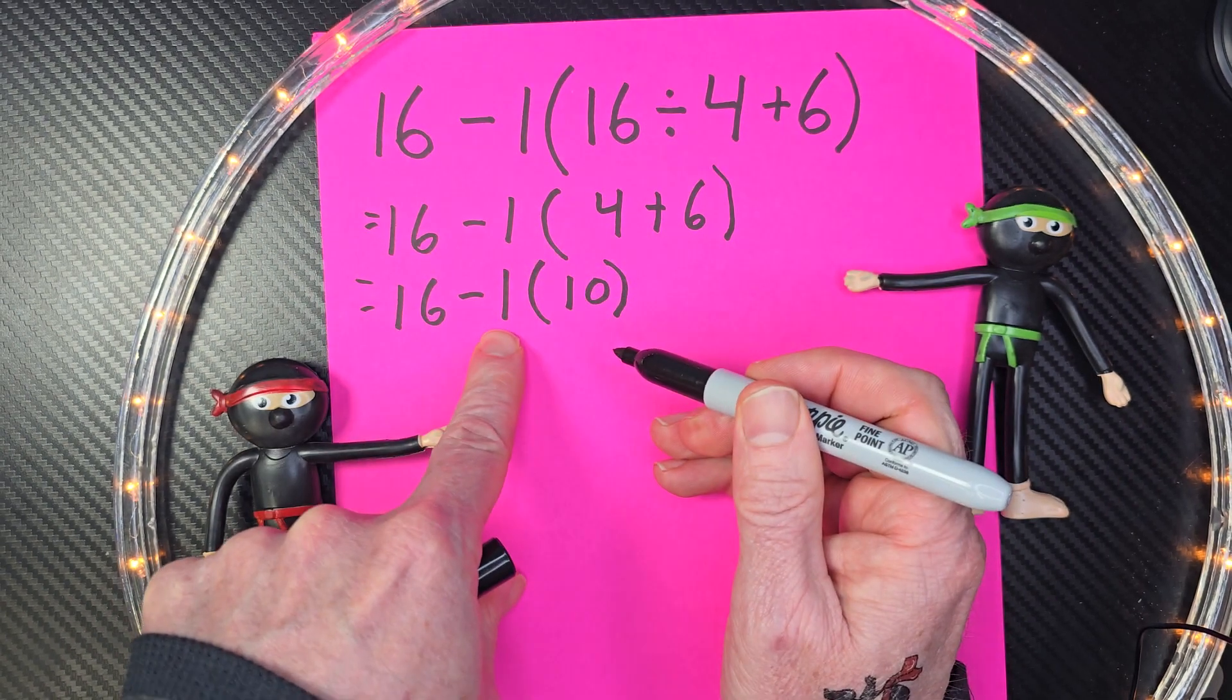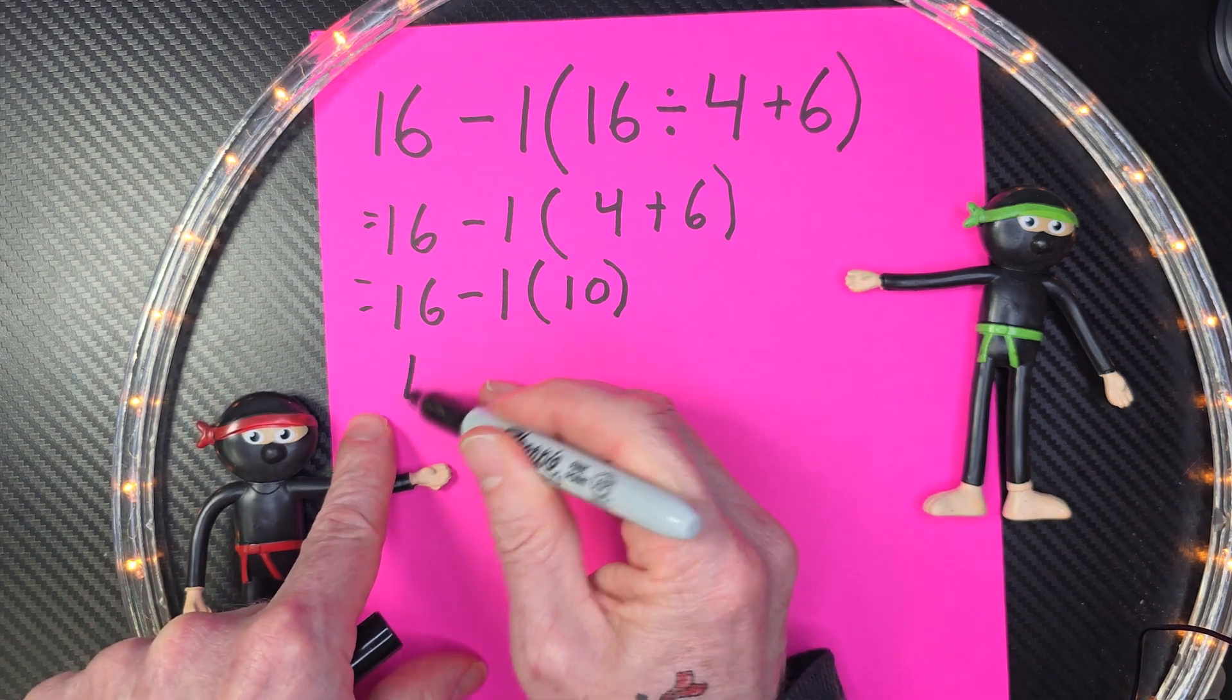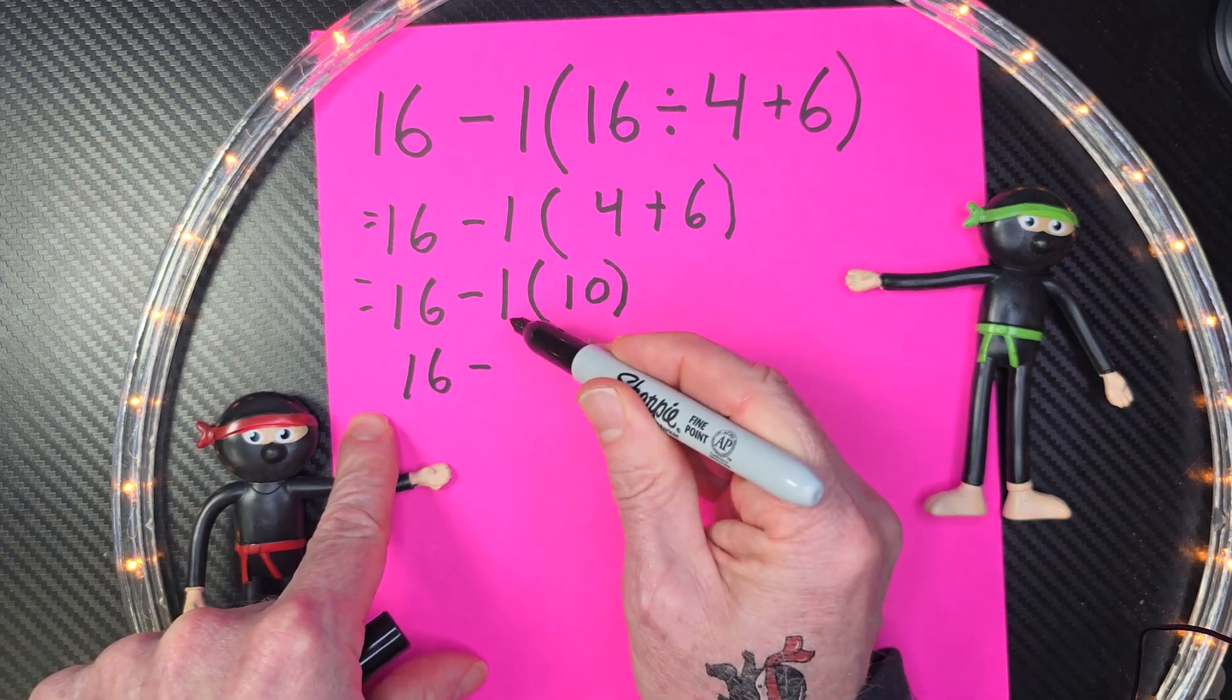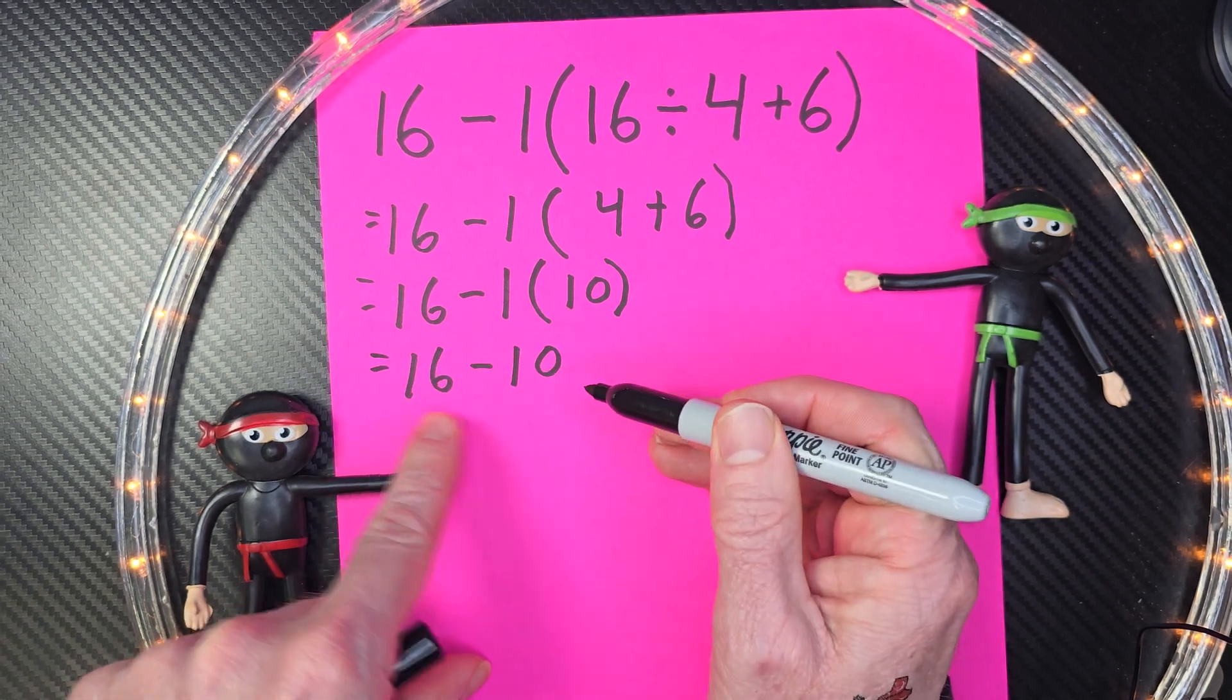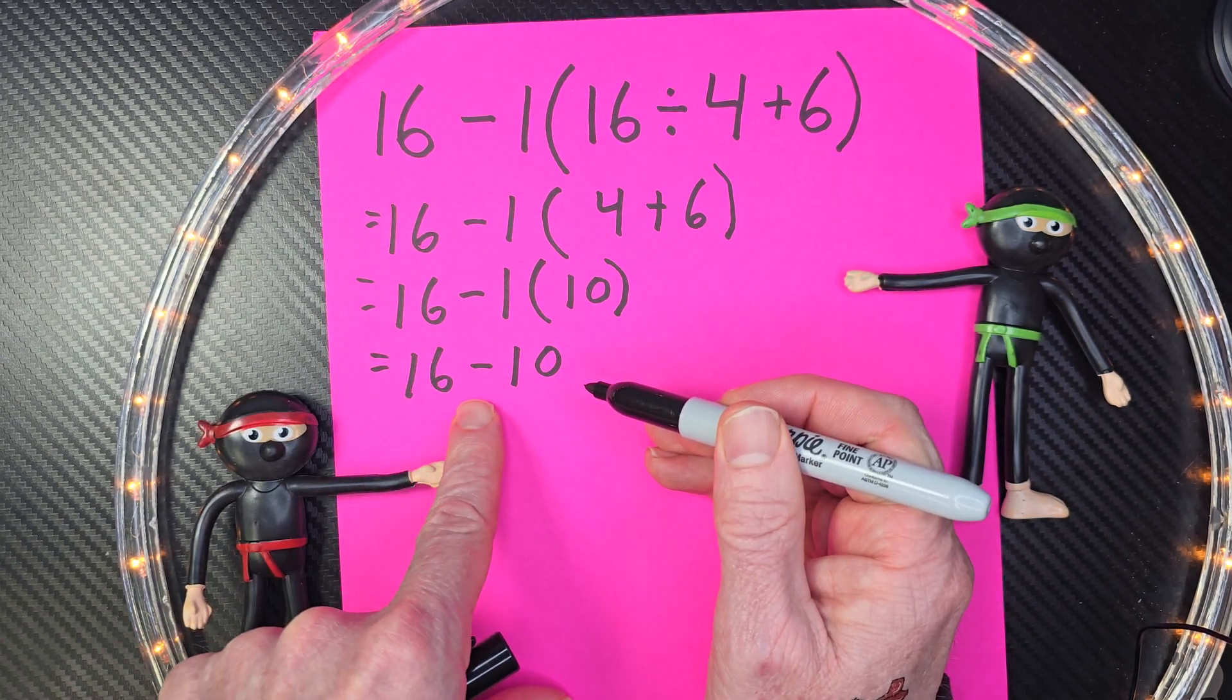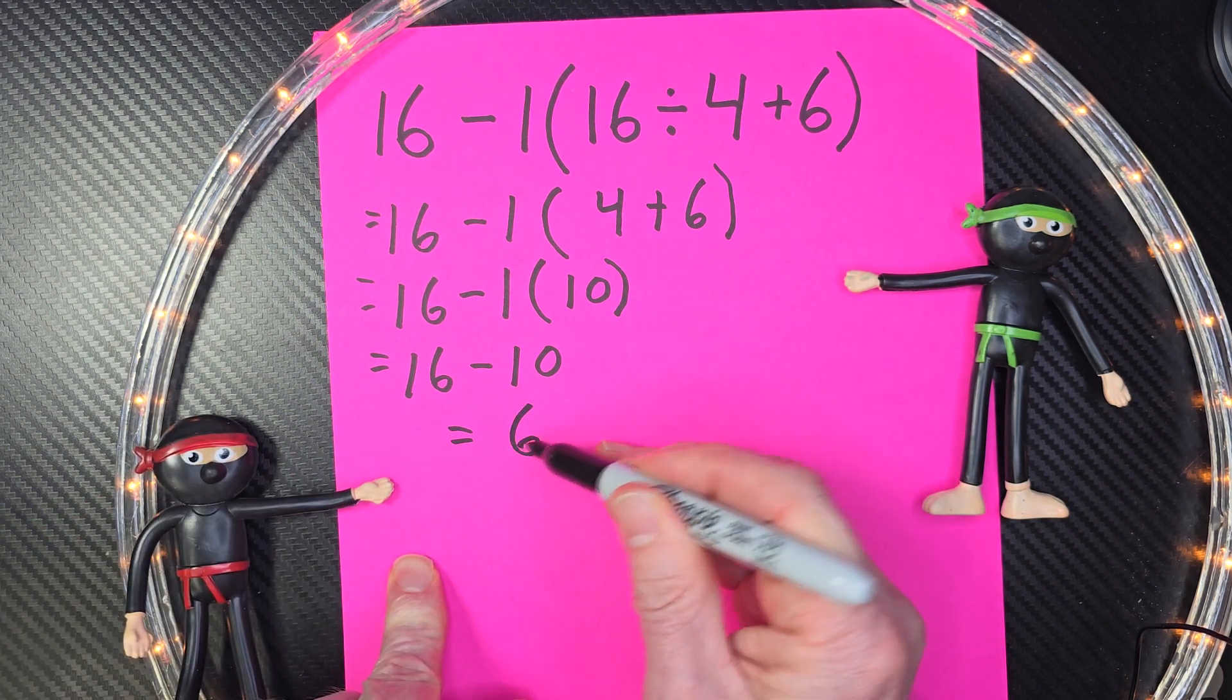I still need to do a little multiplication right here. So that would be 16 minus 1 times 10. And then we're left with subtraction. So that would be 16 minus 10 would equal 6.